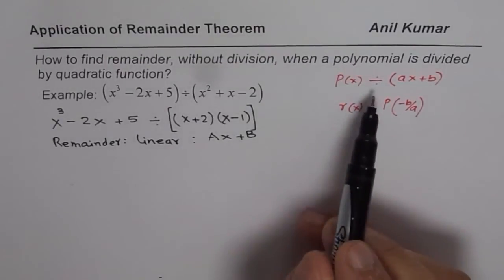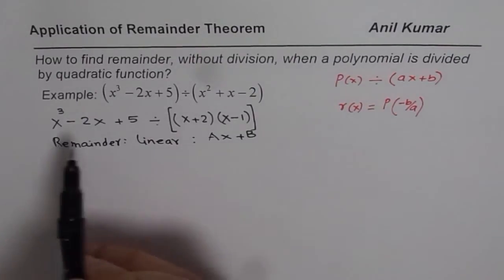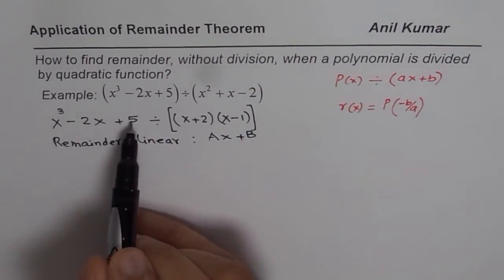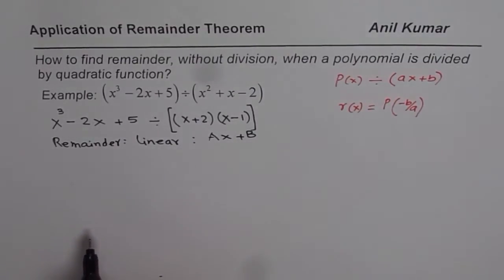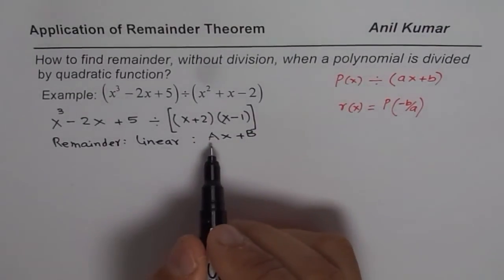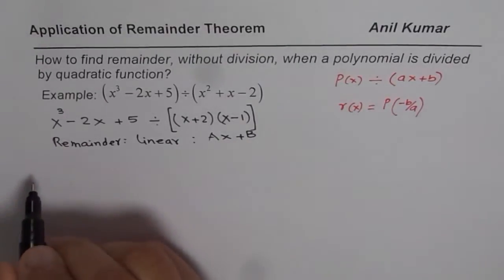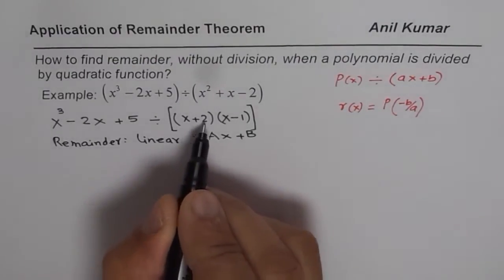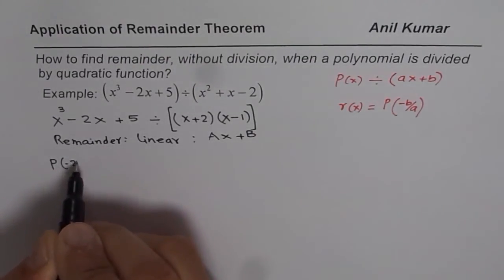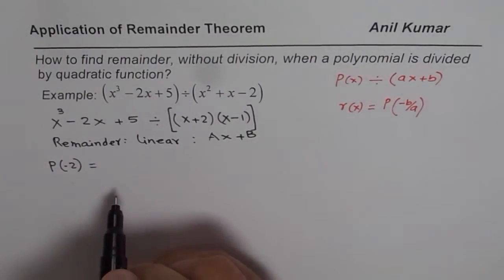We know something that we'll use this remainder theorem in parts. If I divide X³ minus 2X plus 5 by X plus 2, then what is going to be the remainder? Let's do that part first. This is the polynomial for us. We can find the value of this polynomial for minus 2.